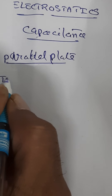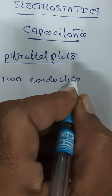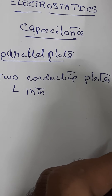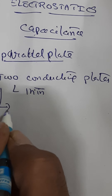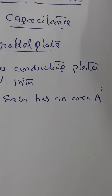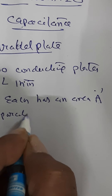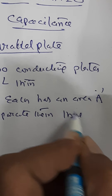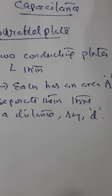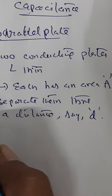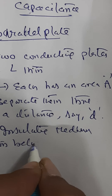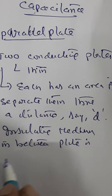For this, I am taking two thin conducting plates, each having an area A, and I am separating them through a distance D. In between, I am placing an insulating medium.